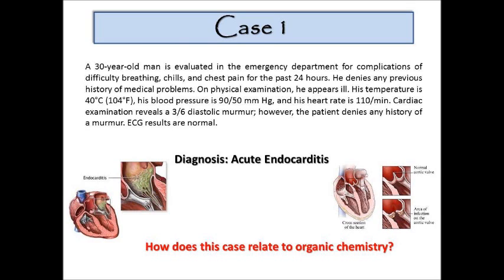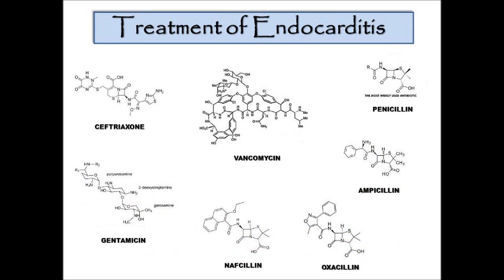Initially you might be thinking, what in the world does this have to do with organic chemistry? But we'll get to that. From this presentation, the diagnosis is acute endocarditis. What we want to discuss is how endocarditis in any way, shape, or form relates to organic chemistry. We can look at this from the perspective of the treatment of endocarditis. On this slide we've got a variety of different drugs used to treat various specific forms of endocarditis.